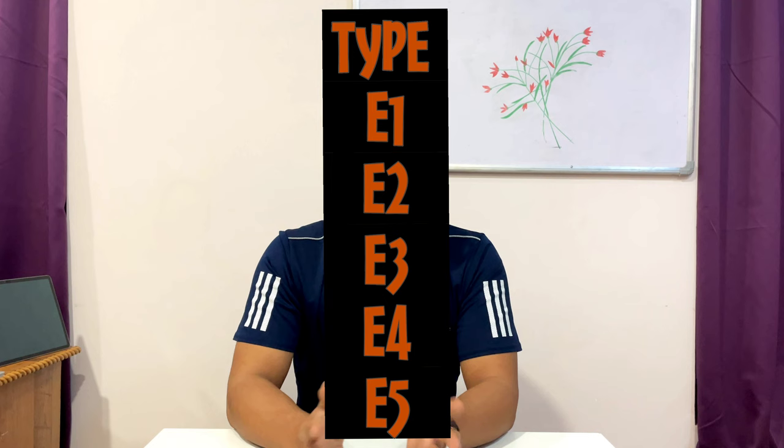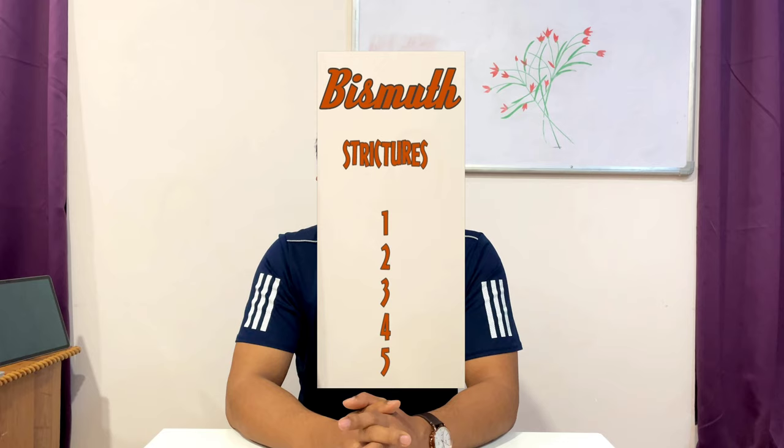Now coming to Type E — it is divided into E1, E2, E3, E4, and E5, just like the Type 1, 2, 3, 4, 5 of the actual Bismuth classification. So in Strasberg it becomes E1, E2, E3, E4, and E5. They are all strictures.